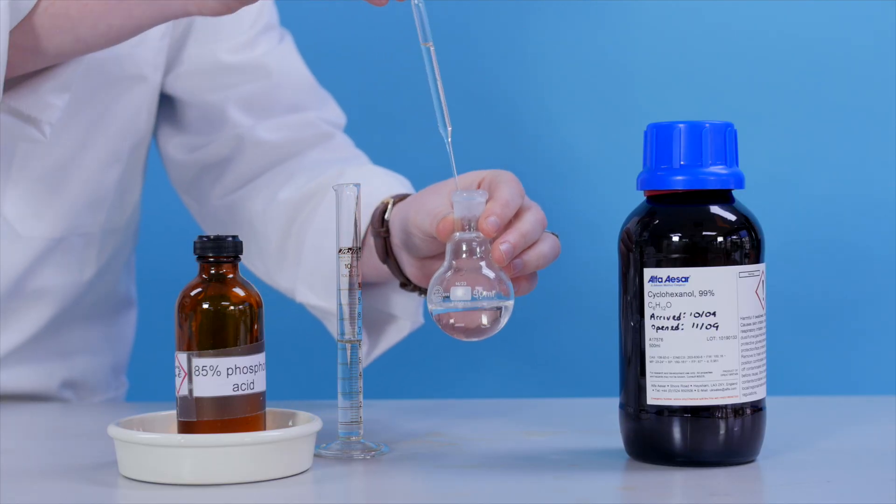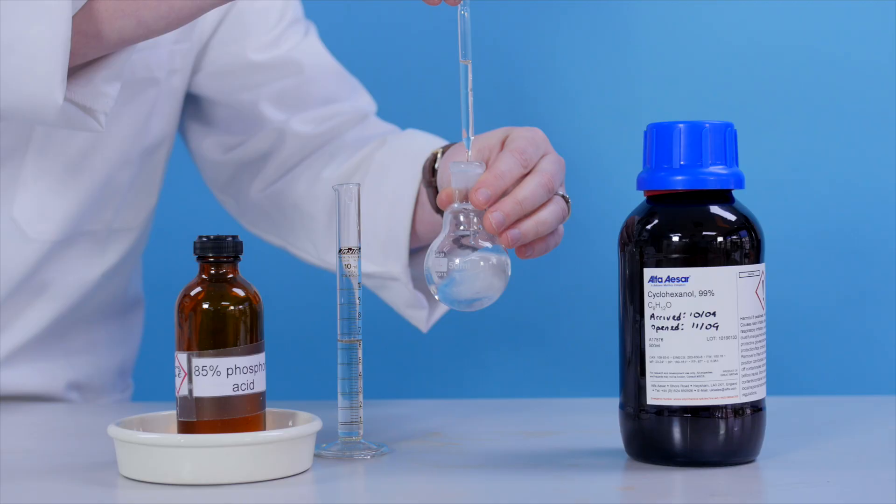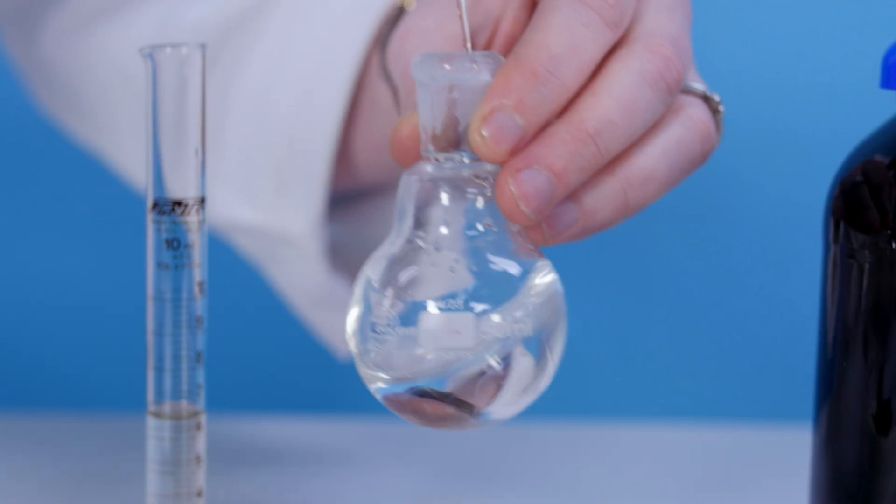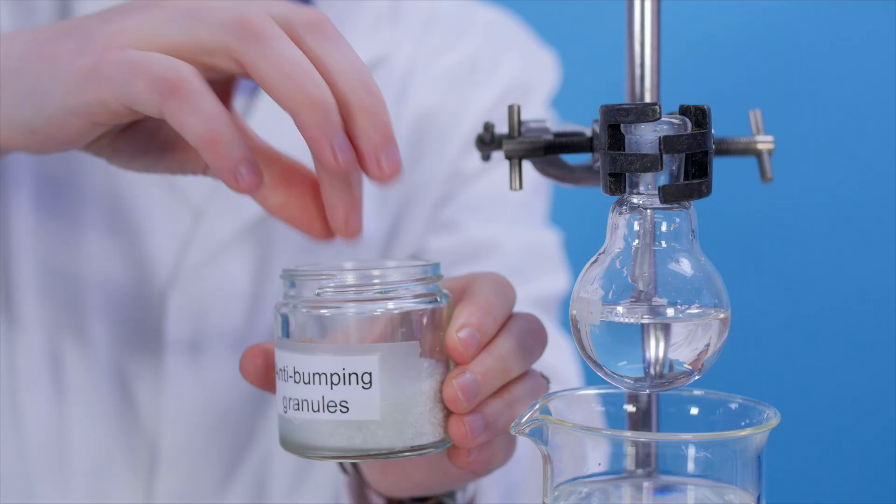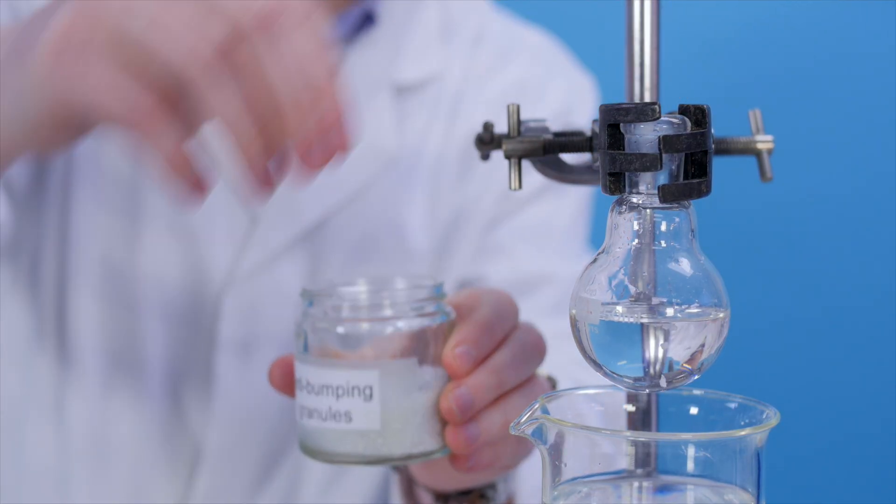Add 8 cm³ of concentrated phosphoric acid drop by drop to 20 cm³ of cyclohexanol. Swirl the mixture while adding the acid. Support the flask with a clamp and then add a few anti-bumping granules.